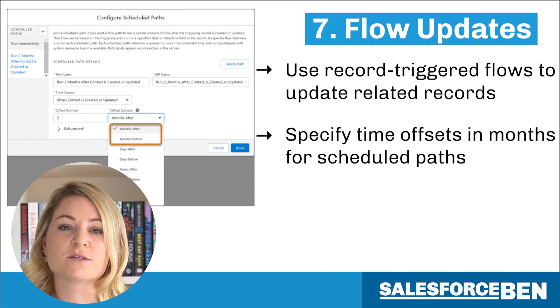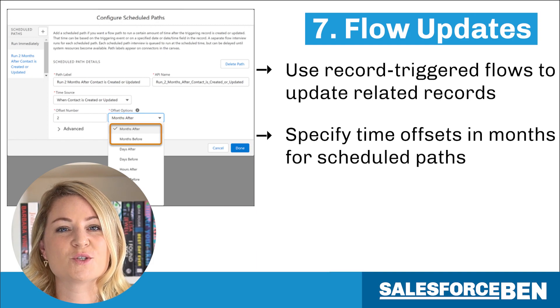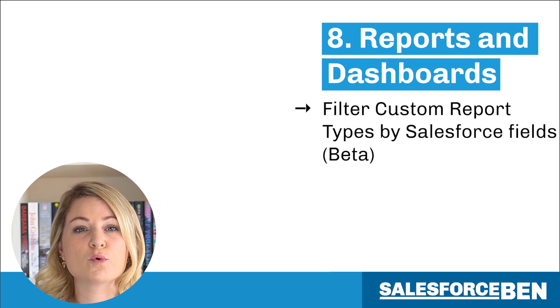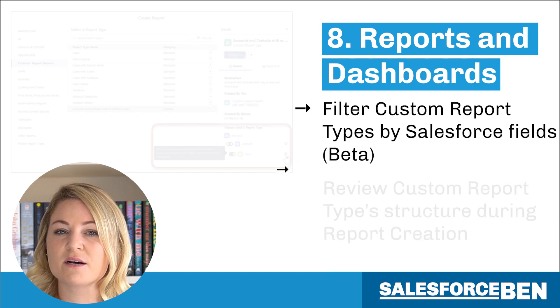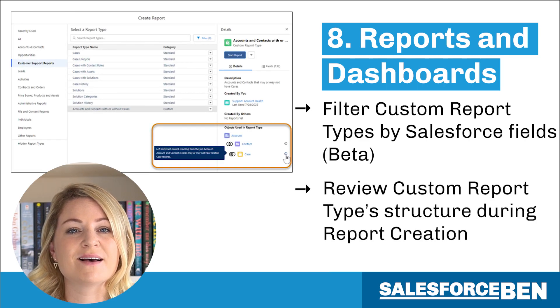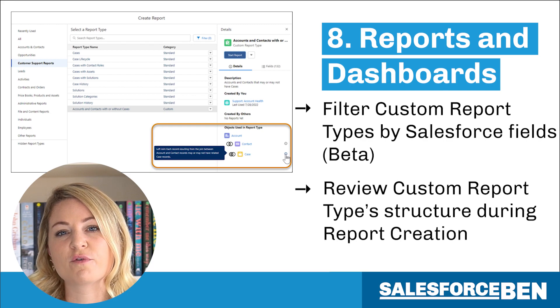Be sure to check out our full article on the new Flow features in Winter 23. Among many updates for reports and dashboards, there are two in particular that we want to call out, and we think these will apply to both users and admins alike. First up, filter custom report types by Salesforce fields. In previous releases, we were granted the ability to filter report types based on Salesforce objects. The Winter 23 release takes this a step further — we are now able to find custom report types that contain a specific standard or custom field. Next up, review a custom report. This enhancement will enable you to see the structure of custom report types, showing the relationships between joined objects.